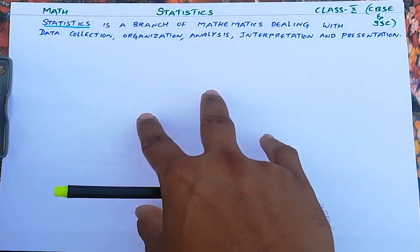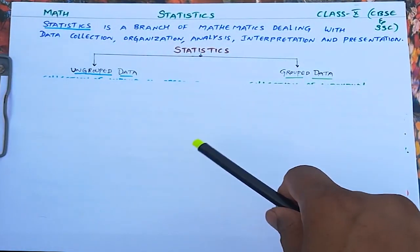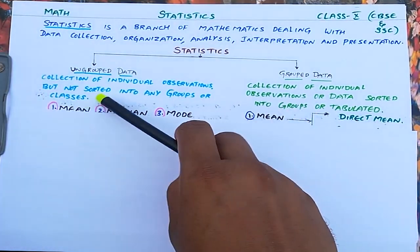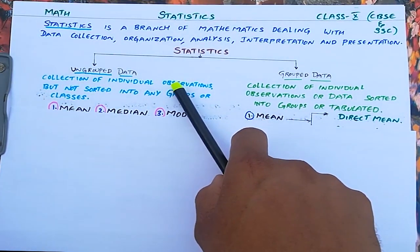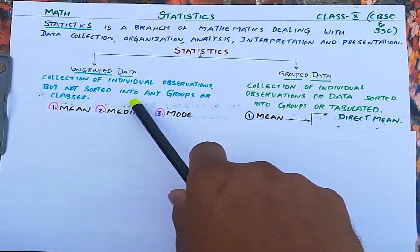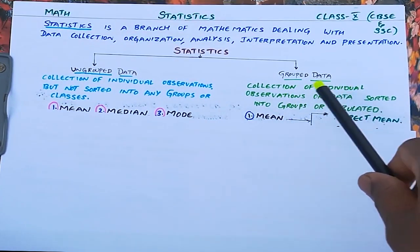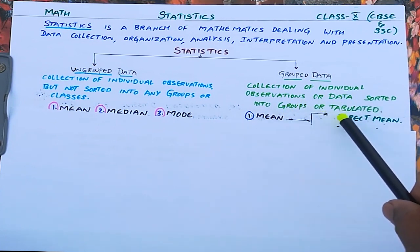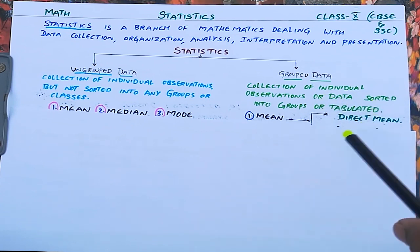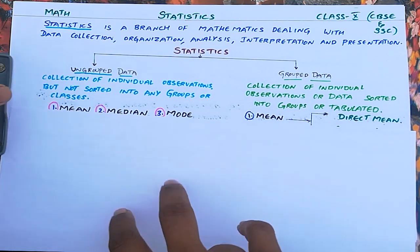Statistics is divided into two forms: grouped data and ungrouped data. Ungrouped data is a collection of individual observations not sorted into any groups or classes — they are not arranged or organized. Grouped data is a collection of individual observations sorted into groups or tabulated in tabular form. Both ungrouped and grouped data have mean, median, and mode.